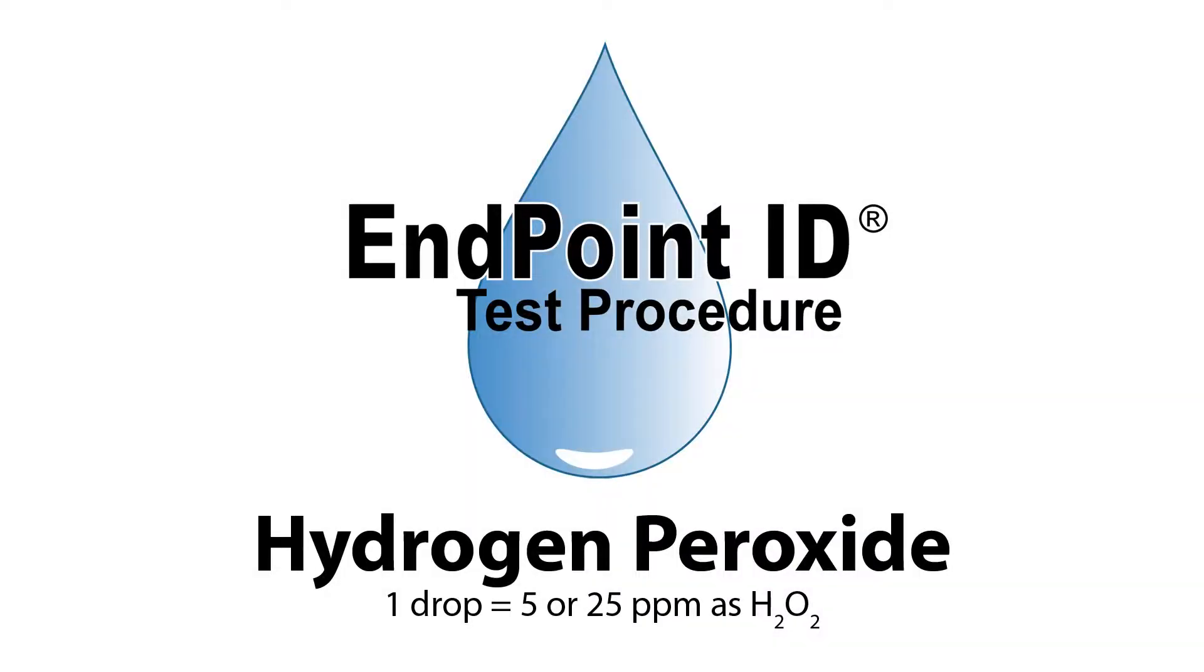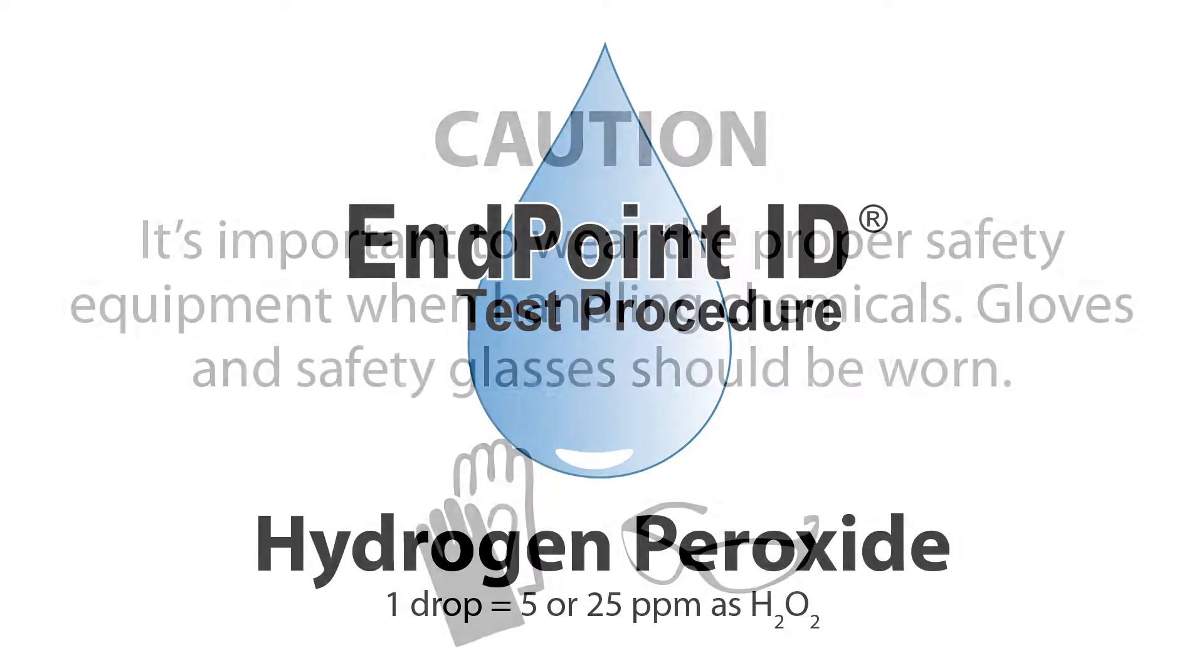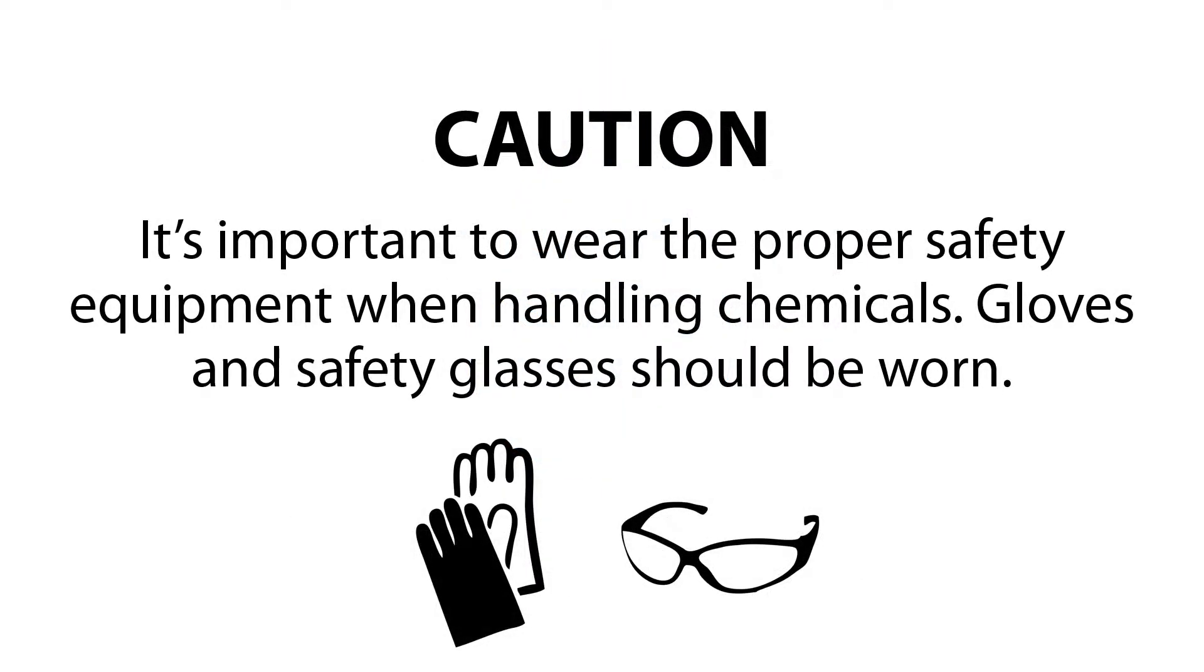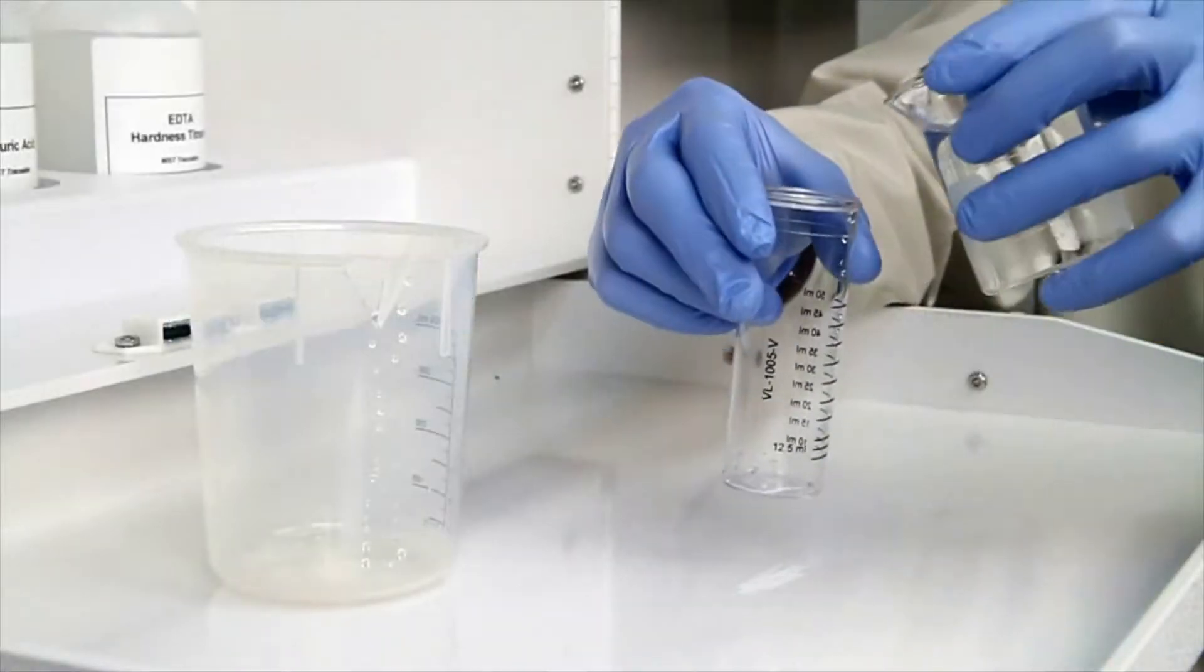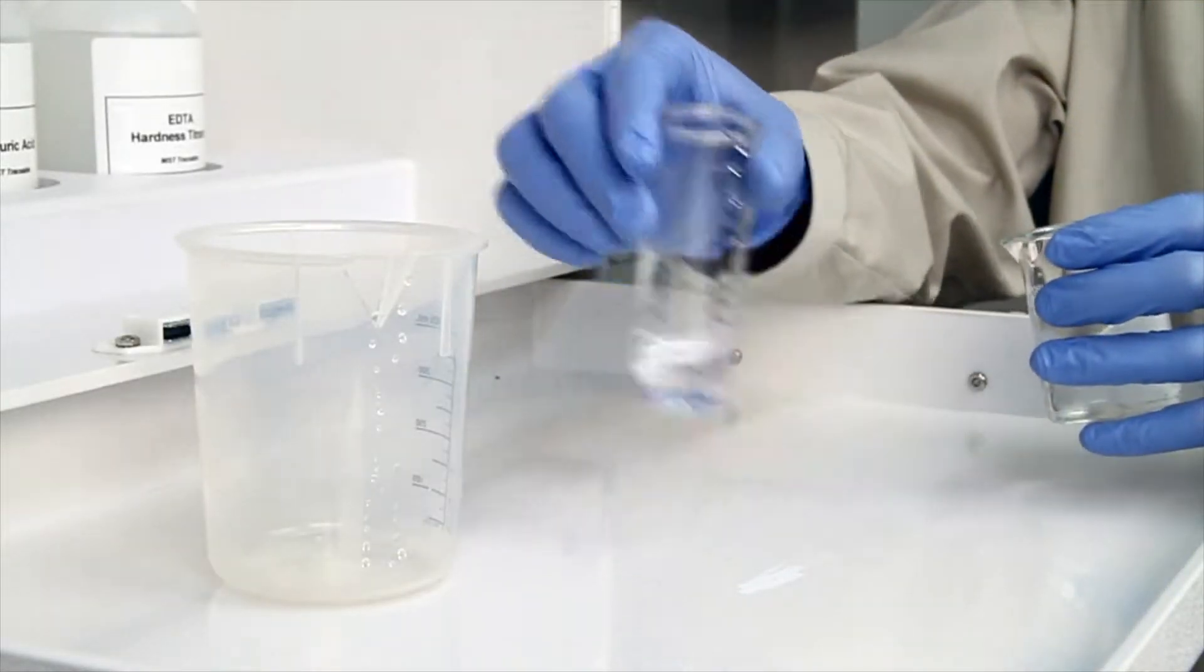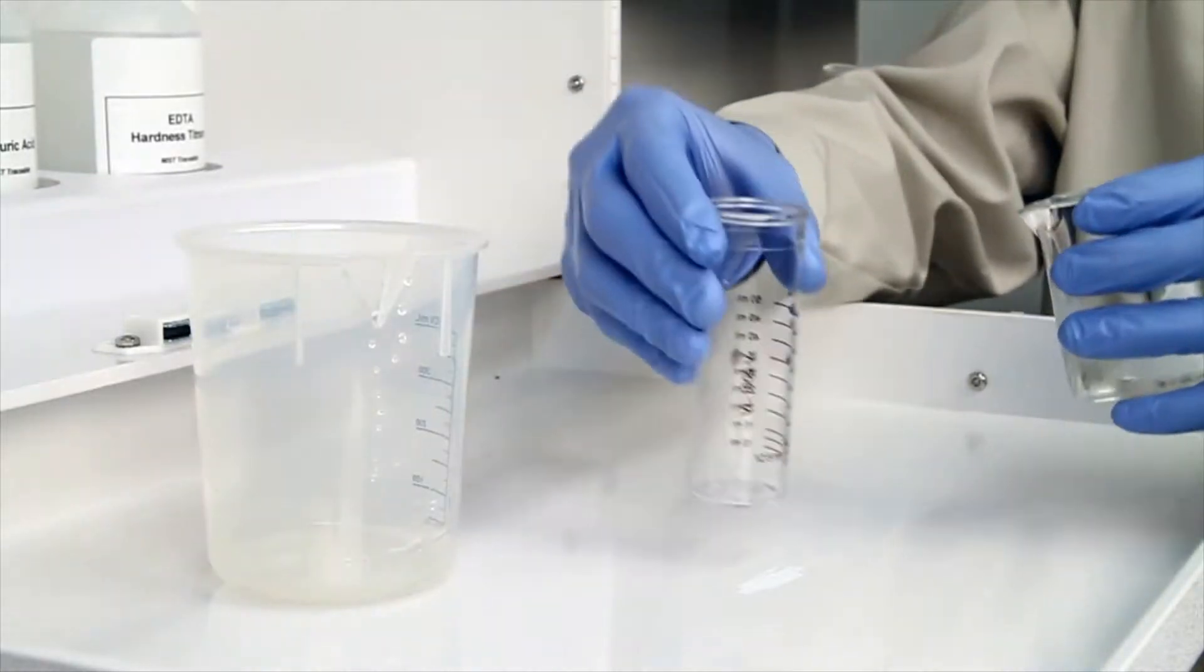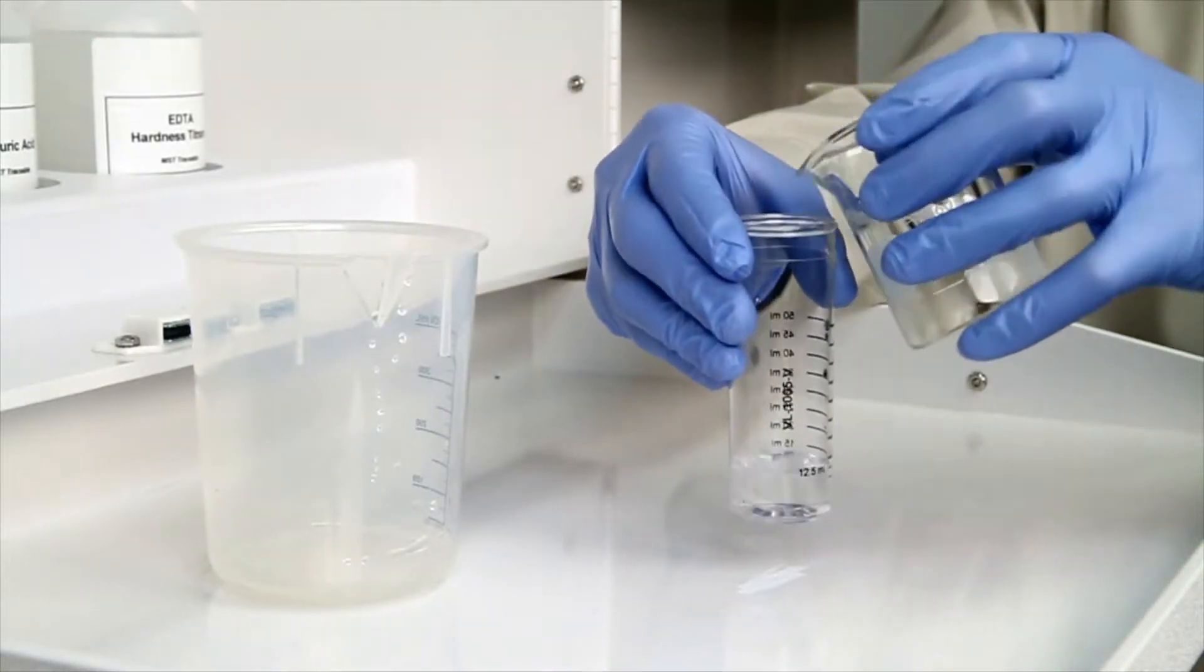This is a demonstration of a hydrogen peroxide drop count test kit using Endpoint ID procedures. The first step according to the Endpoint ID procedure is to gather an accurate sample. The smallest change in sample size will lead to inaccurate results.